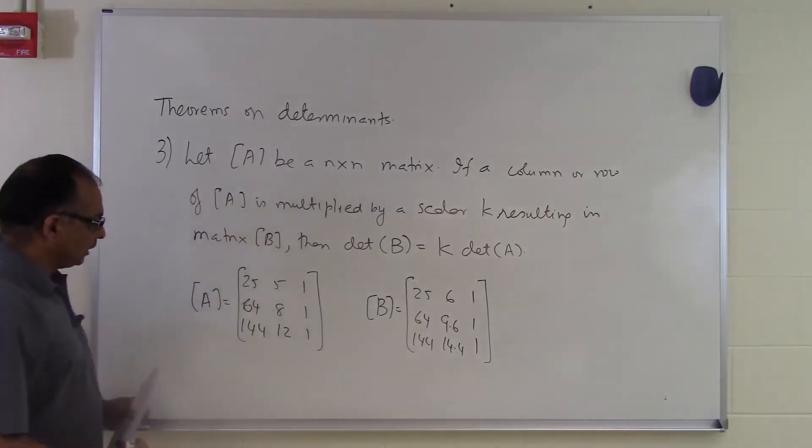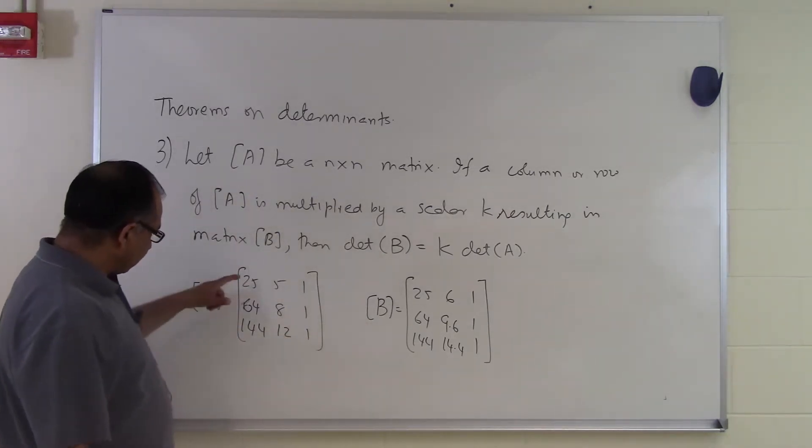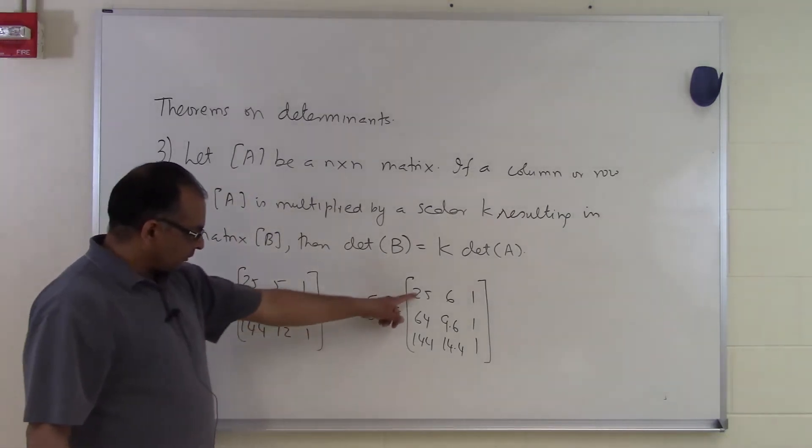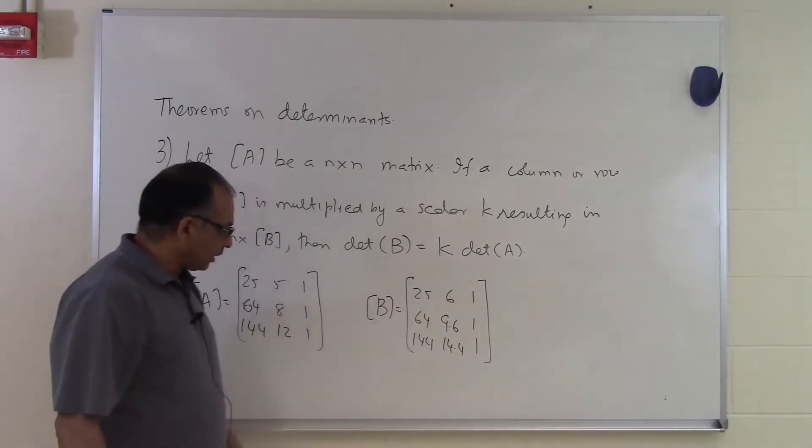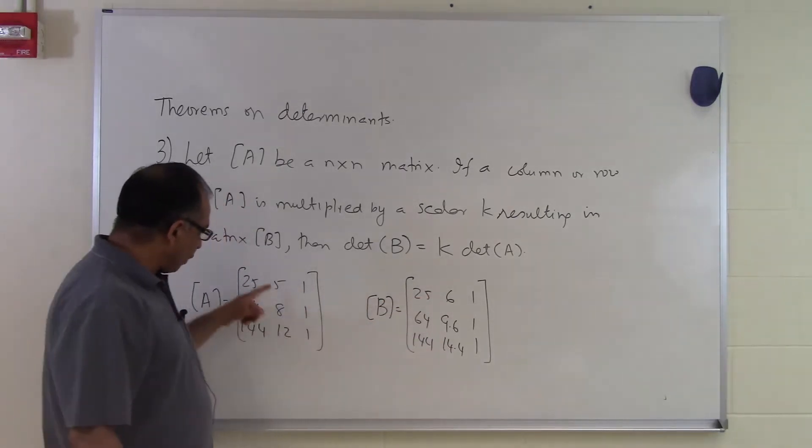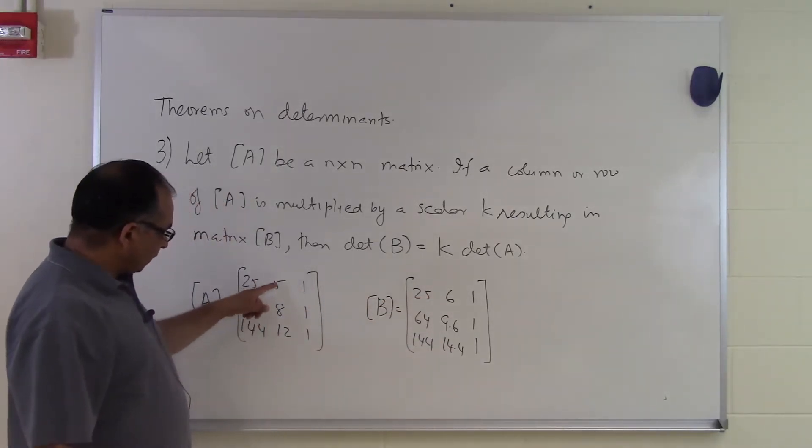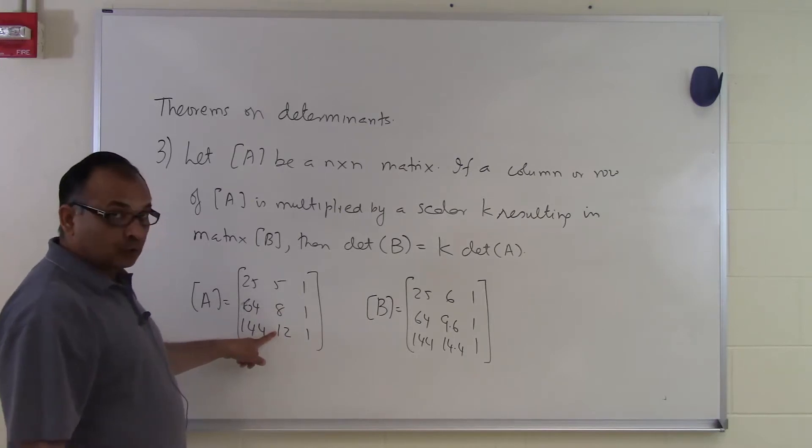And you can see that the A matrix and B matrix have some similarities. The first column is the same as the first column right here. The third column is the third column there. But what you're finding is that in the second column, the second column here is 1.2 times the second column right here, because 1.2 times 5 is 6, 1.2 times 8 is 9.6, 1.2 times 12 is 14.4.